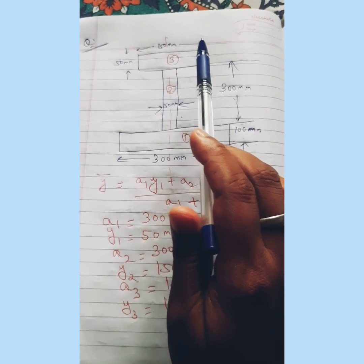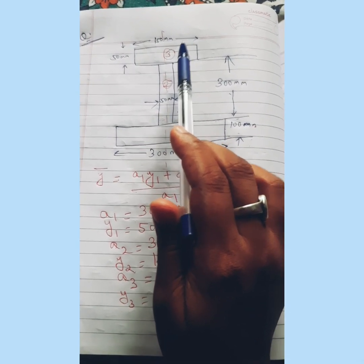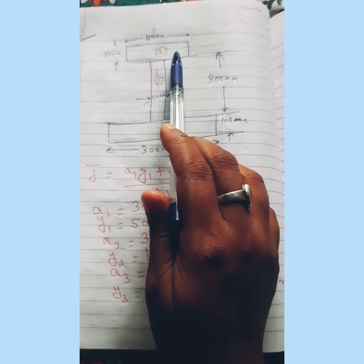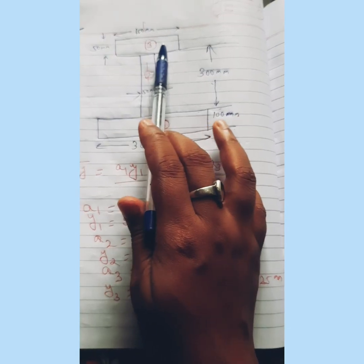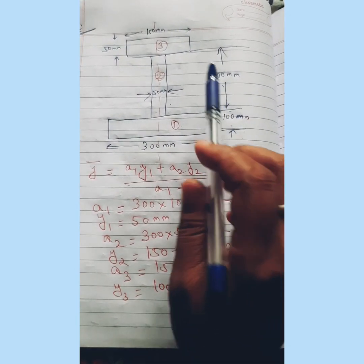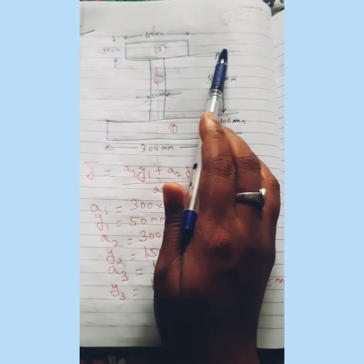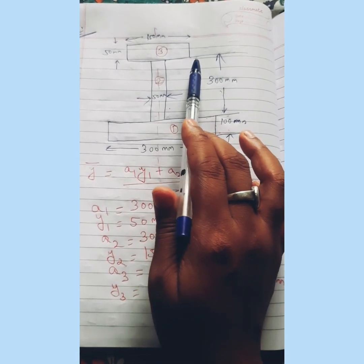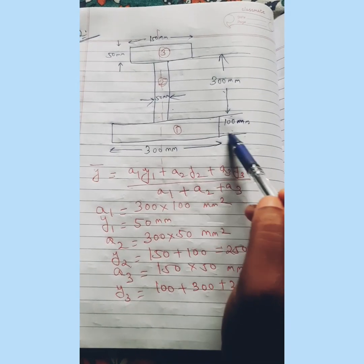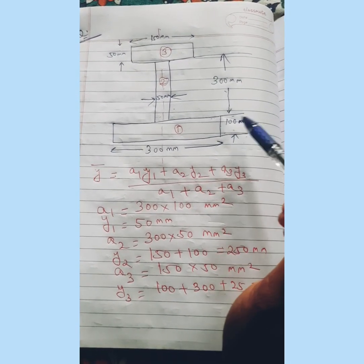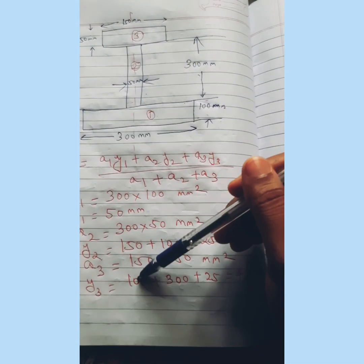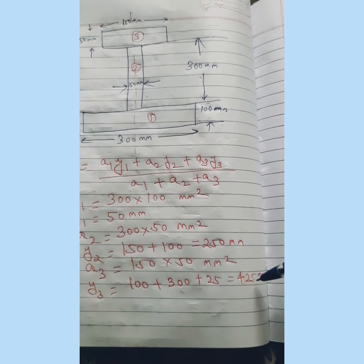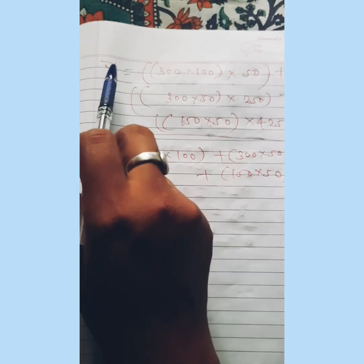The area of the third section (top flange) is also a rectangle: A3 = 150 × 50 mm². Its center of gravity lies at its middle, which is 50/2 = 25 mm from its base. Taking the bottom surface as reference, the total distance is 100 + 300 + 25 = 425 mm. So y3 = 425 mm.